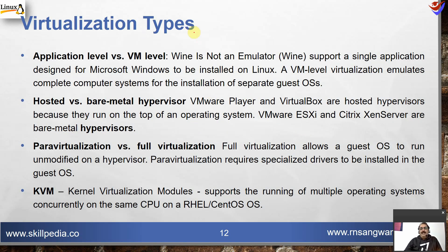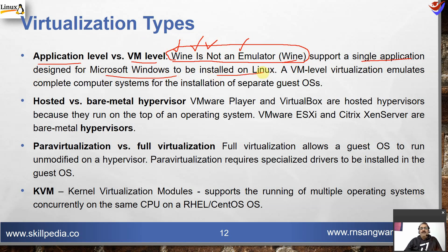Virtualization types: first, application-level versus VM-level virtualization. Wine is not an emulator — it supports a single application designed for Microsoft Windows to be installed on Linux. For example, you can run Internet Explorer on Linux using Wine.